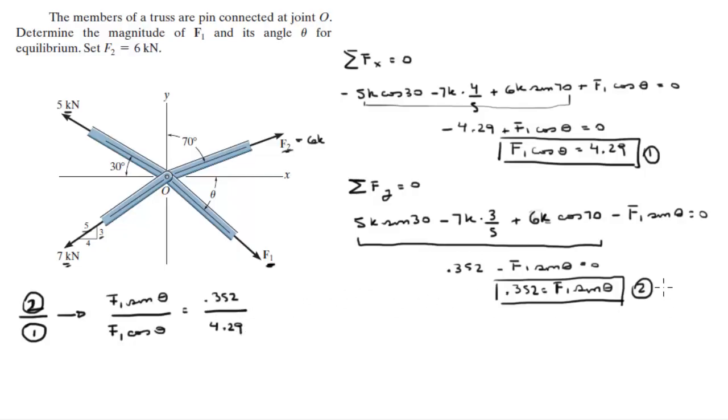So basically what I did is I divided this formula by this formula. Now look what happens, the F1 cancels out. Sine over cosine of the same angle is tangent of the same angle, of 0.352 over 4.29.